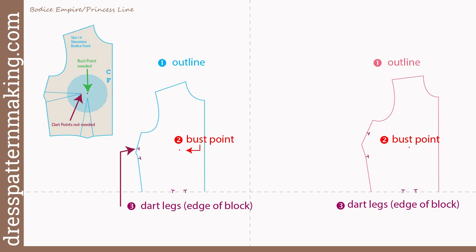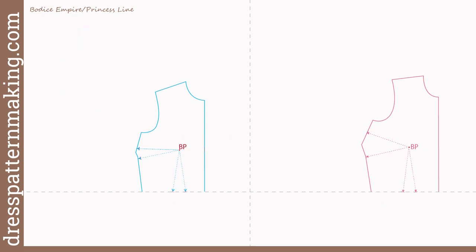First, draw a horizontal waistline on a piece of paper large enough to trace your block. The brown shaded shapes represent cardboard blocks. The standard block stays on the left with blue lines; my block is on the right with pink lines. Place the block on the waistline with the center front waist point on the line and the center front at right angles. Ignore and don't trace the parts that dip below the waist for waist shaping — they are irrelevant.